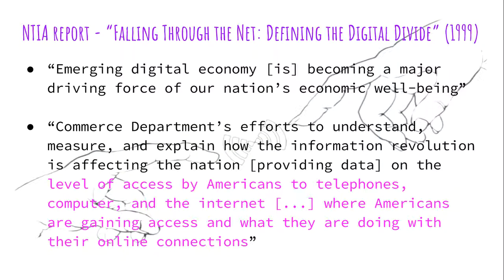Our first reading that we looked at was the NTIA report. This was actually a survey conducted by the Census Bureau — the third of three surveys. The first two started in 1995, and the collection of this data was taken from 1994 to 1997. They surveyed 48,000 sample homes in 754 geographical areas, looking at internet usage and computer usage at home and accessibility to those things.